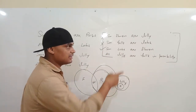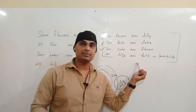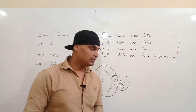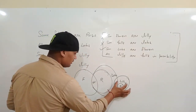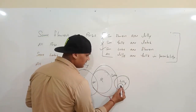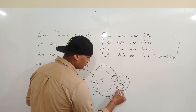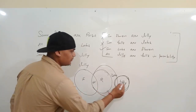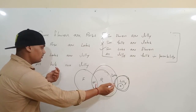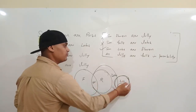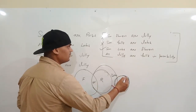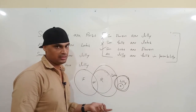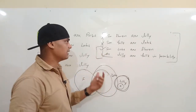'All lily are hills — is a possibility?' Dekhiye, 'All hills are lily' statement mein hills lily ke andar hain. Agar dono ko equal bana dein toh 'All hills are lily' bhi puri ho jaayegi — toh ye possibility toh hai. Isliye ye statement sahi hai. Last ke do options aapke sahi hain — baki sab galat. I hope aapko samajh mein aaya hoga.